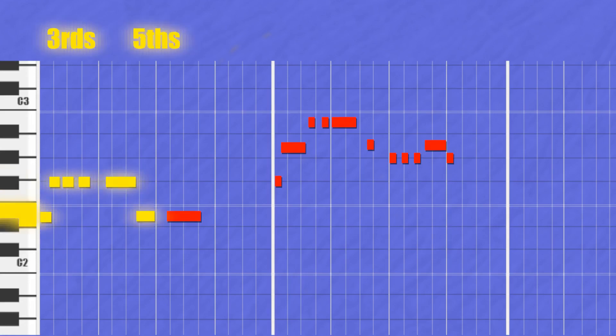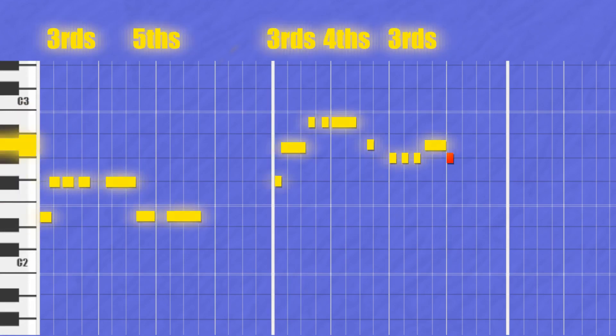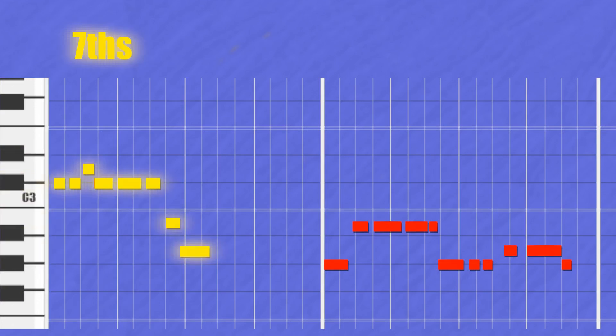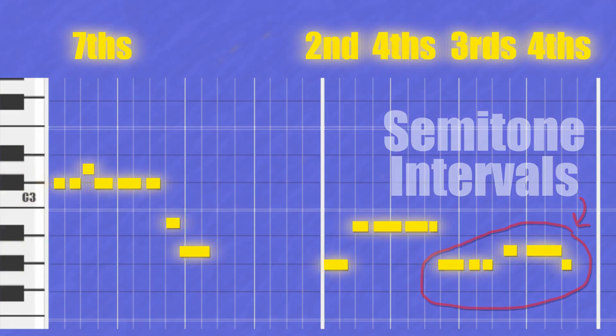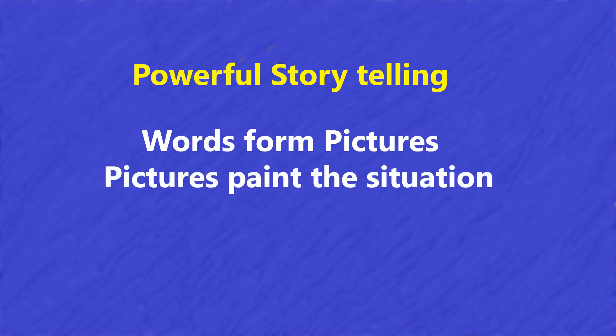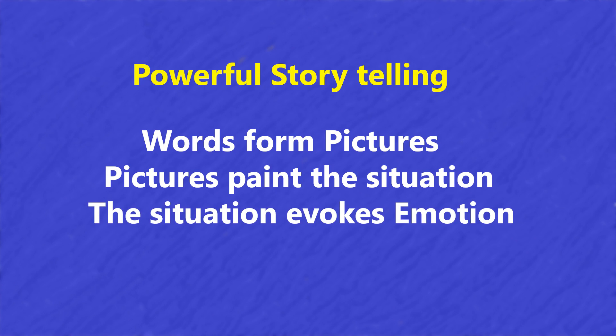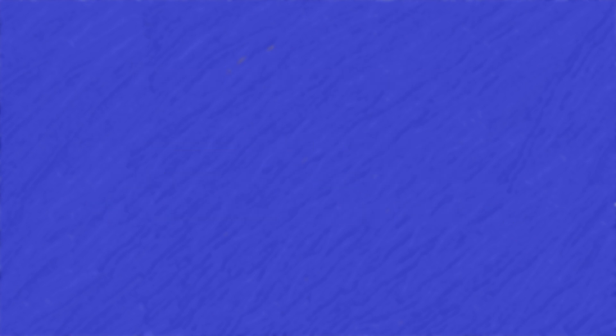The melody uses a lot of thirds, fourths, fifths, and sevenths — and those semitone intervals really create a lot of emotion. This is a story song, like The River by Bruce Springsteen or Fairy Tale of New York by the Pogues. She tells the story by painting a picture of the situation. In the verse, she never tells us how she feels. Instead, she paints a picture and lets the listener do the feeling. Words form pictures, pictures paint situations, and it's the situations that evoke emotion. The lyrics are pretty matter of fact and have a conversational rhythm.